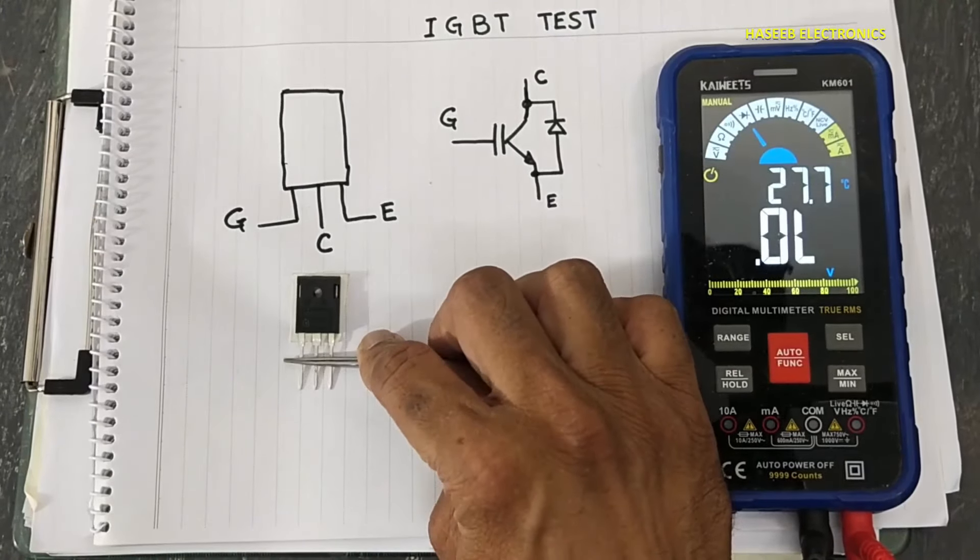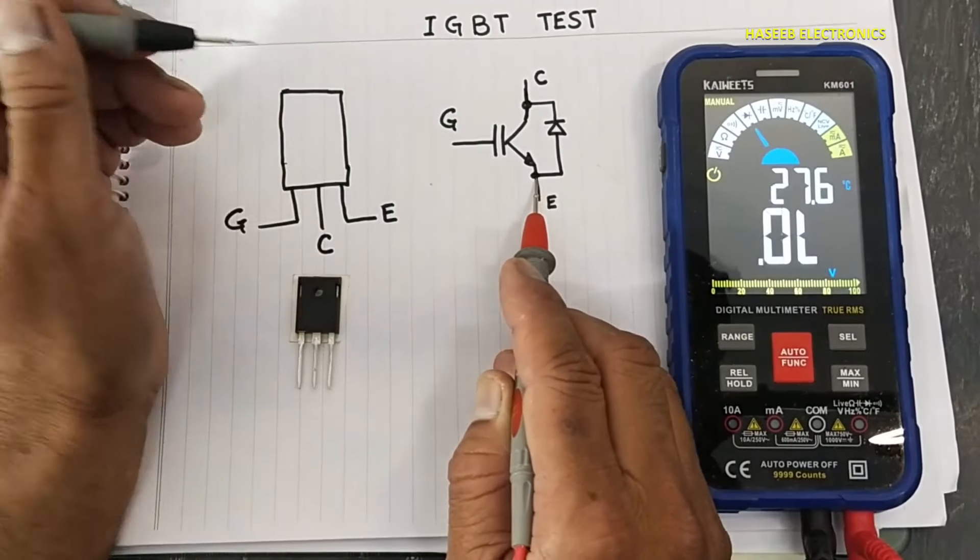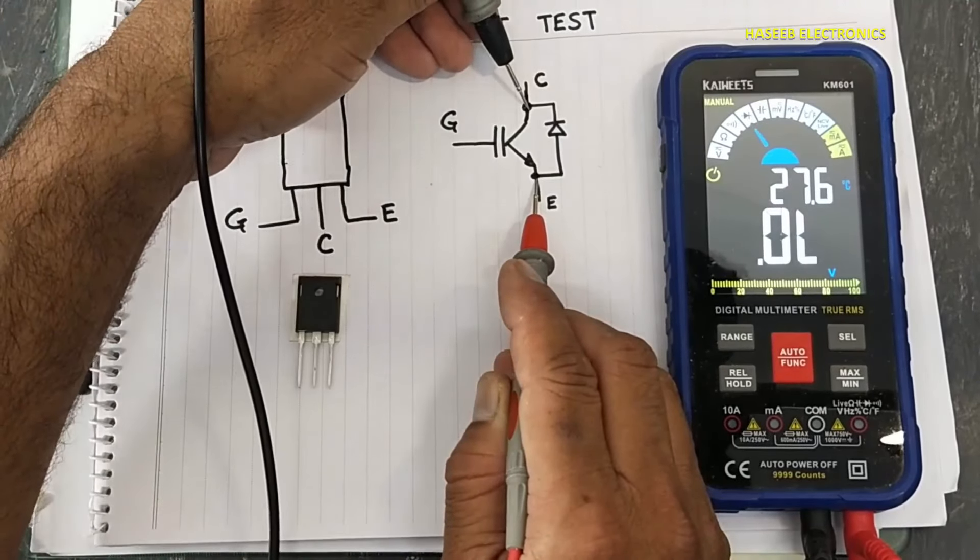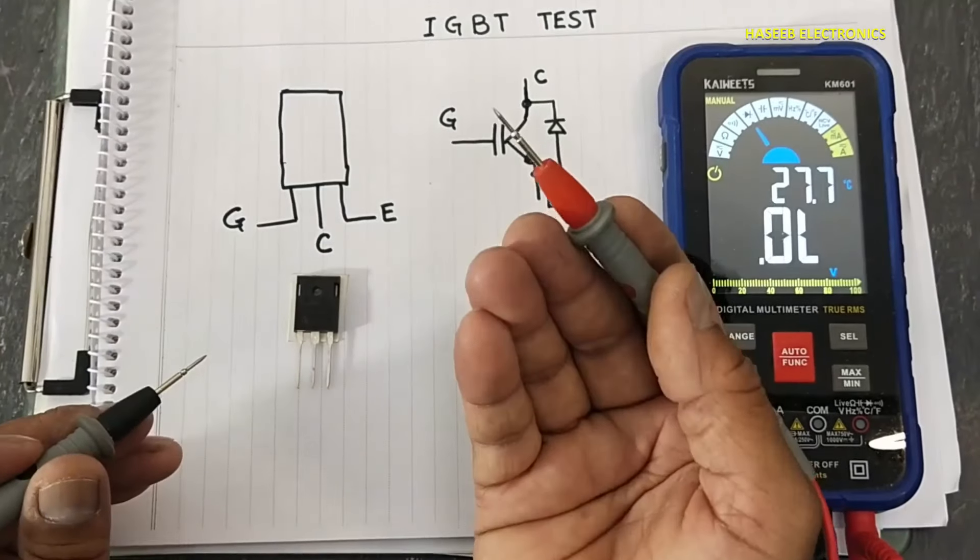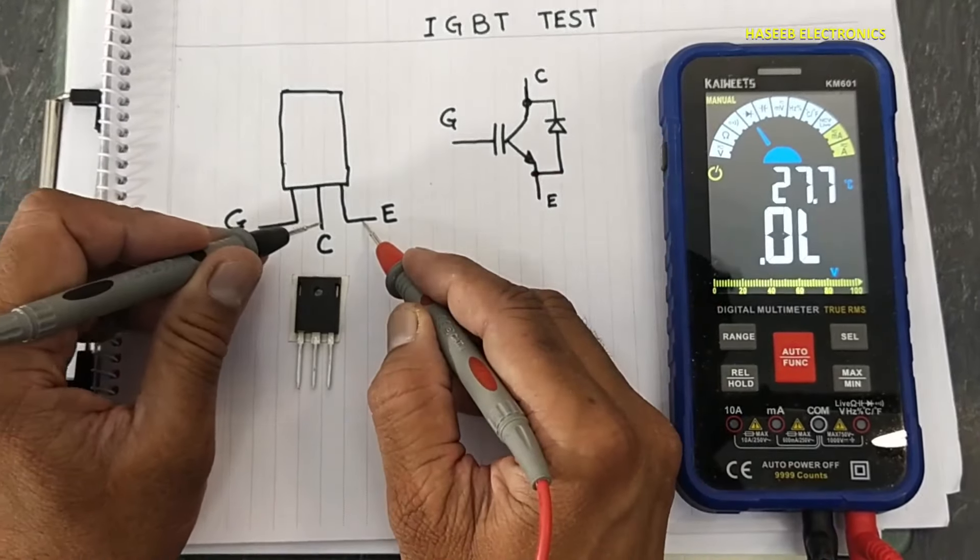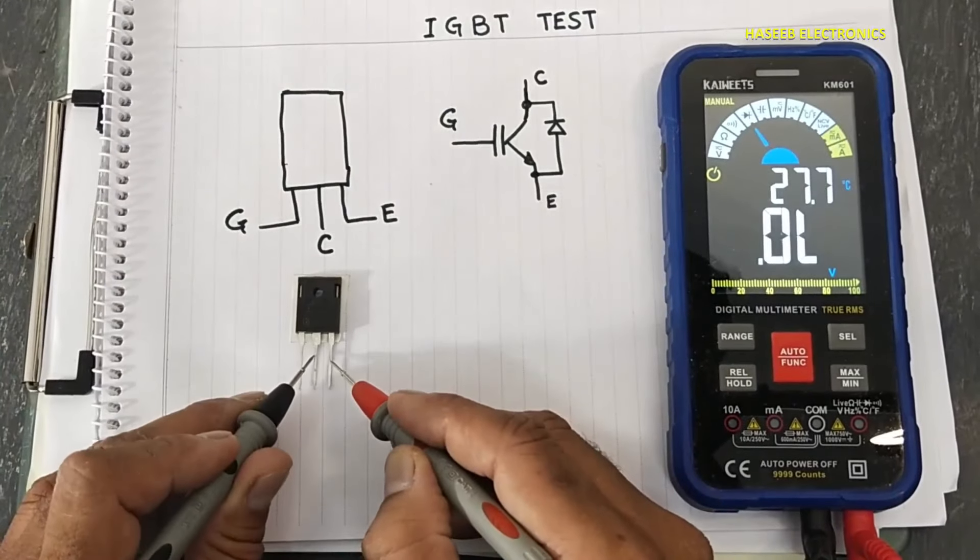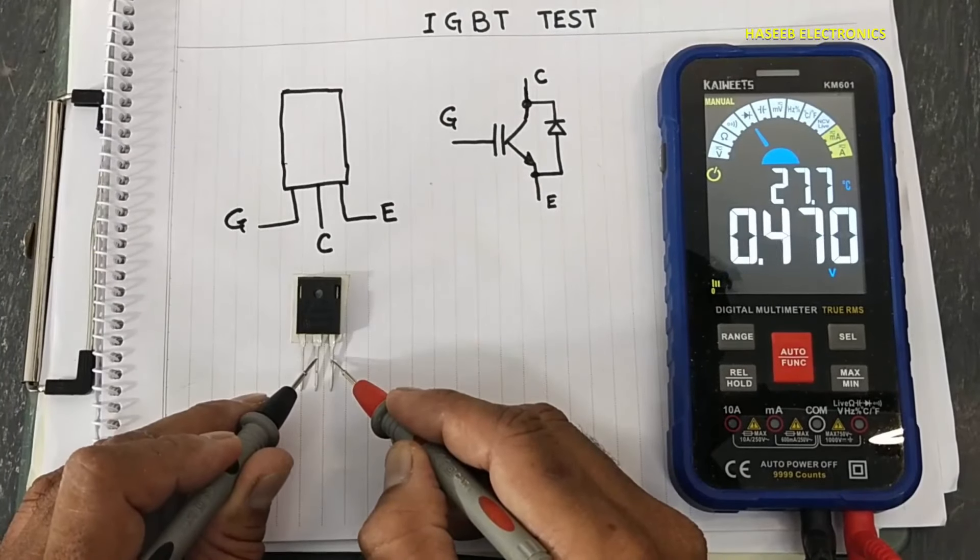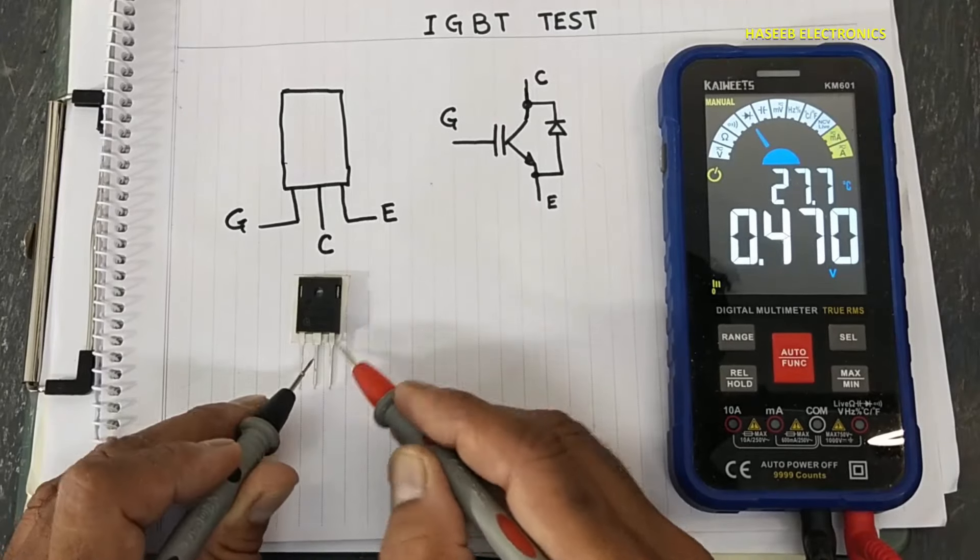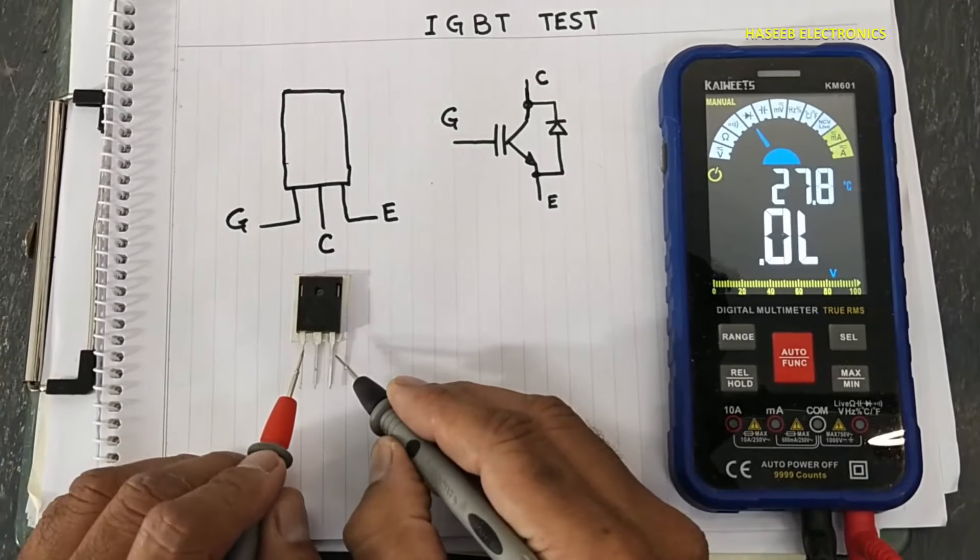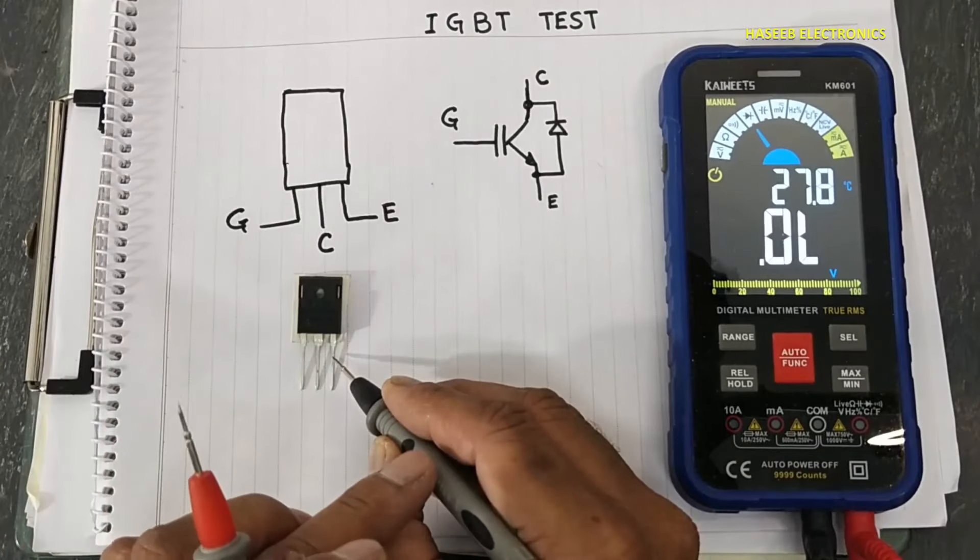Red lead at emitter, black lead at collector, so we will test this diode. Red lead at emitter, black lead at collector - it is giving one diode forward voltage. Reverse the leads. Black lead at emitter, red lead at collector.